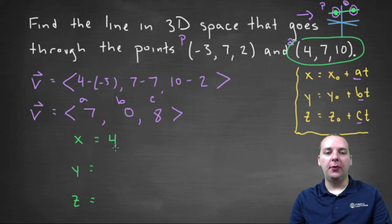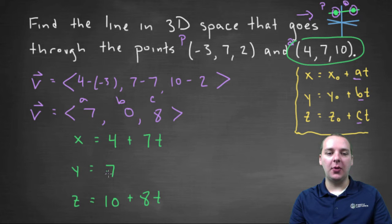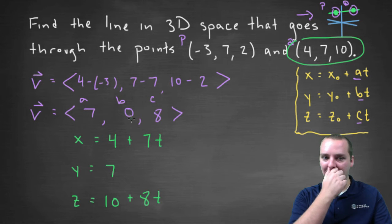So we would have four plus seven T, that's A-T. Then we'd have seven plus zero T, because B is zero. And then we would have ten plus eight T. So notice you've got your X-knot, Y-knot, Z-knot. And then you would have your A-T, B-T, and C-T that we have listed right here.